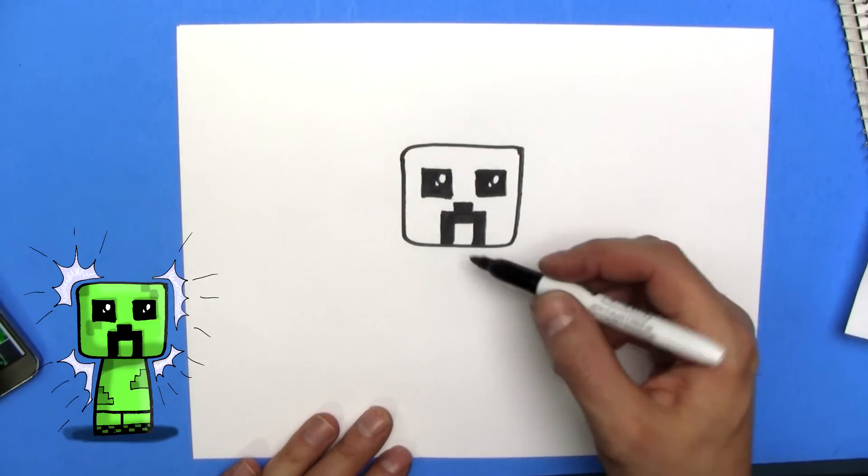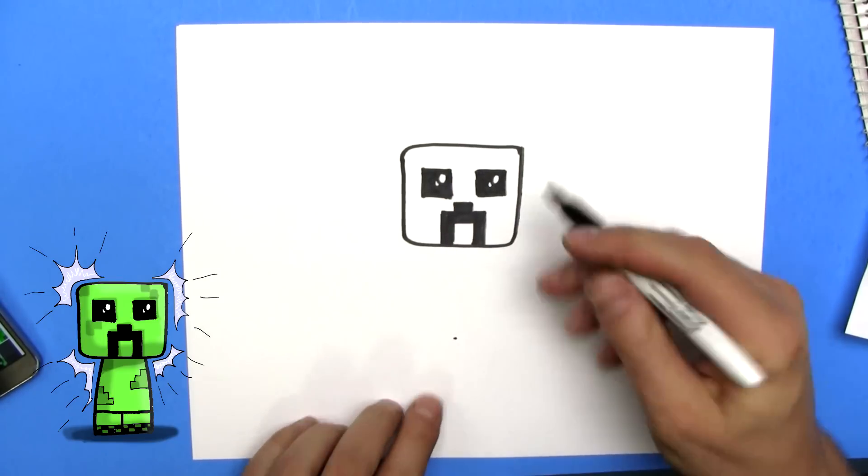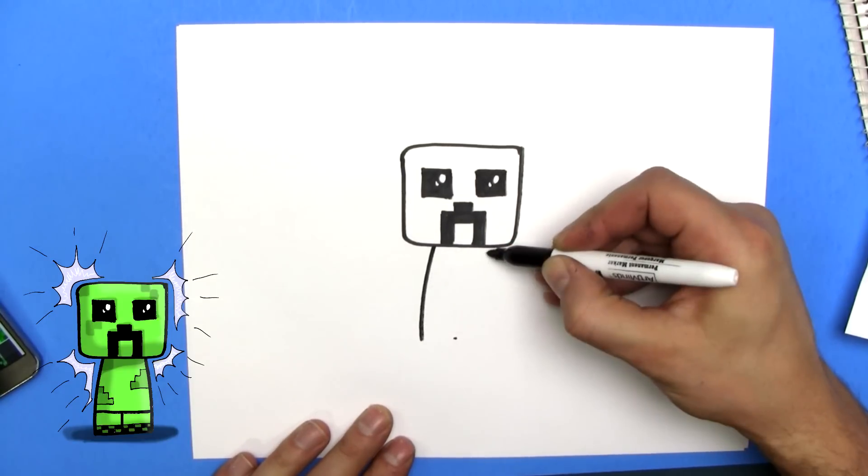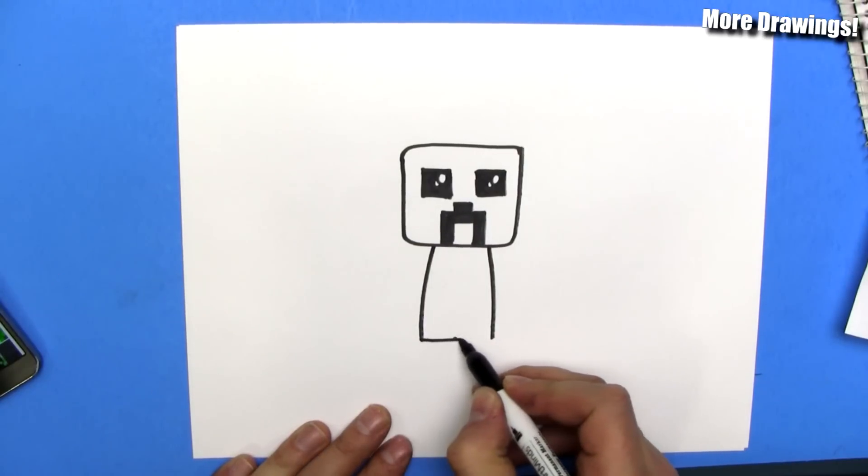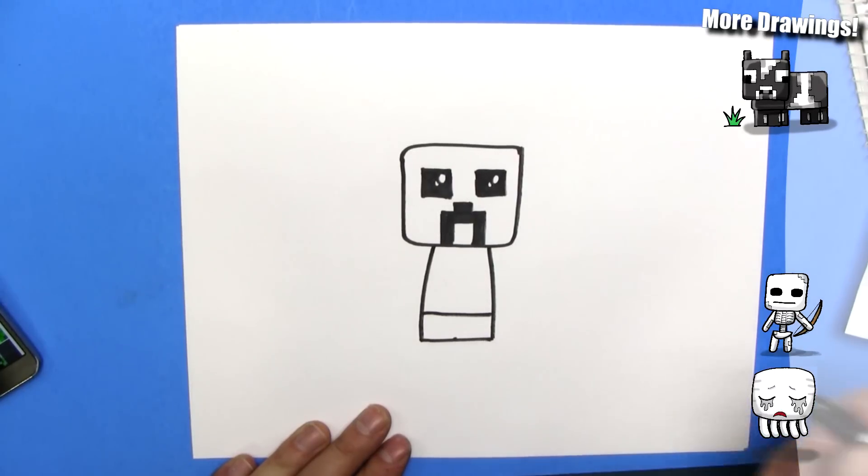Very good. Next up, we'll do his body. Chibi rules say the body should be the same length as the head, so we'll do that, and we'll draw two lines like that. This time, I'm going to draw a straight line across, another straight line across up here, and we'll draw his feet in, just like that.